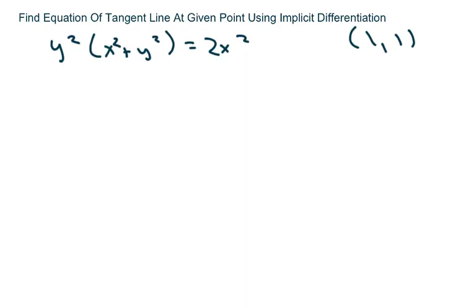Hi everyone, we're going to find the equation of a tangent line at a given point using implicit differentiation. This is our equation and this is our given point.